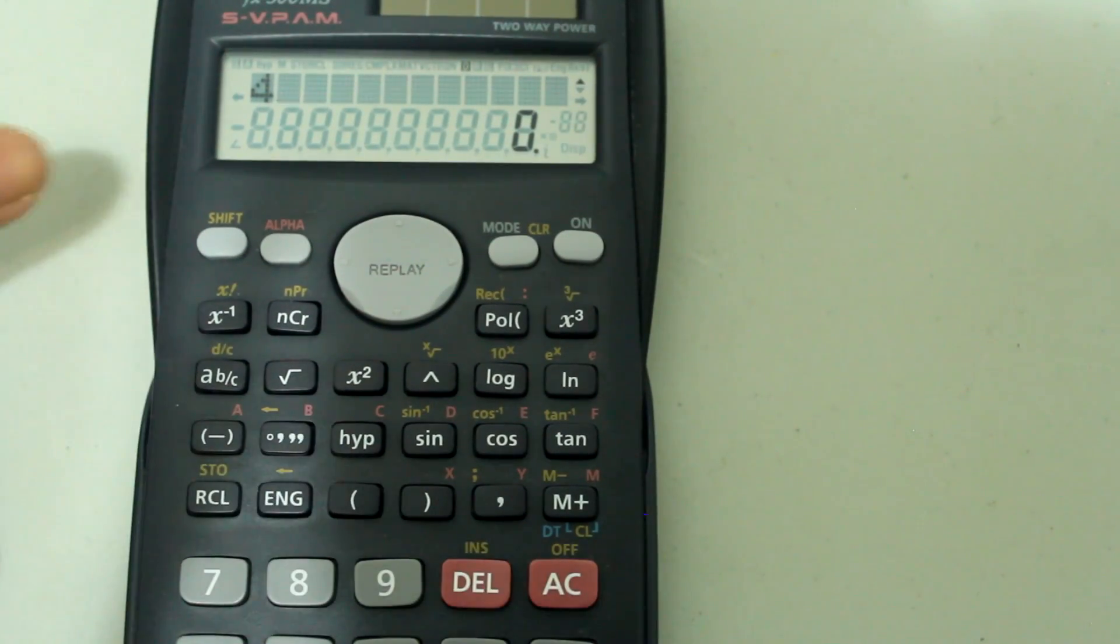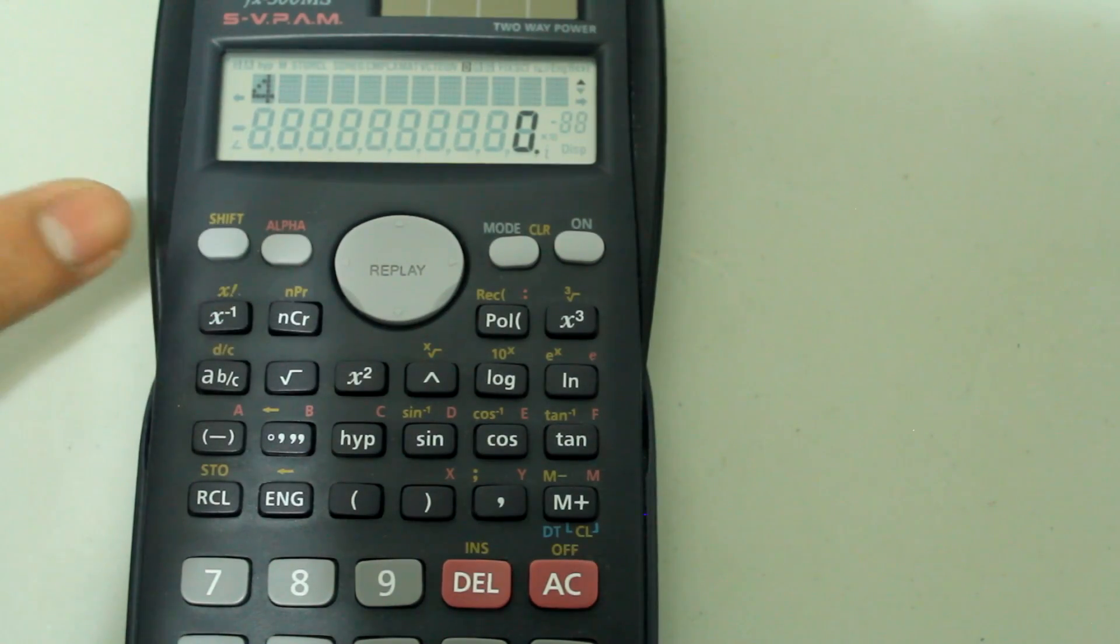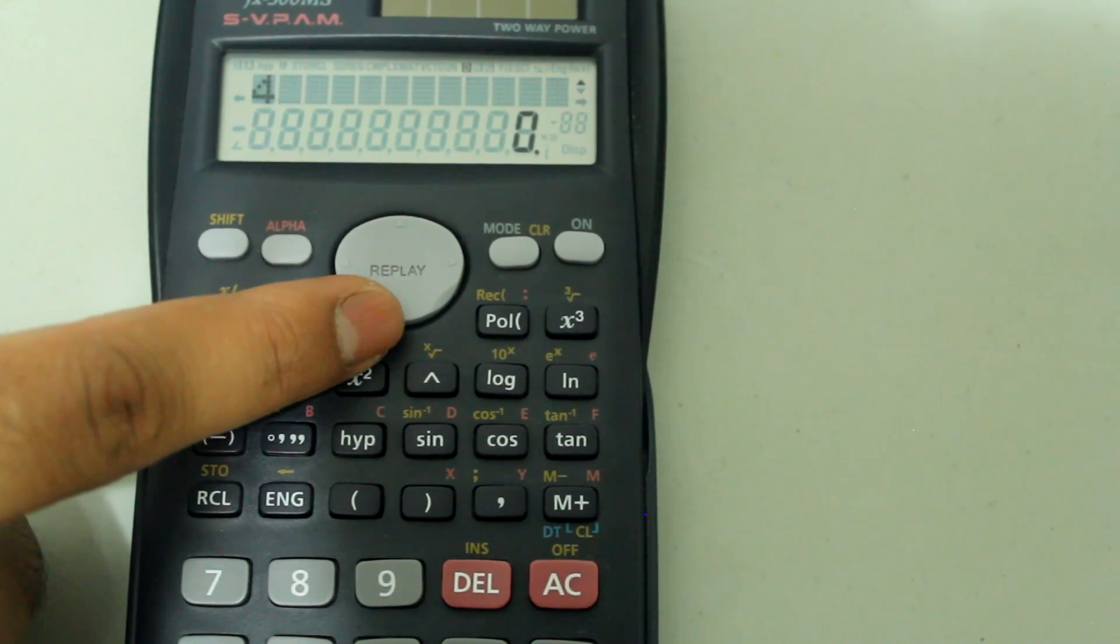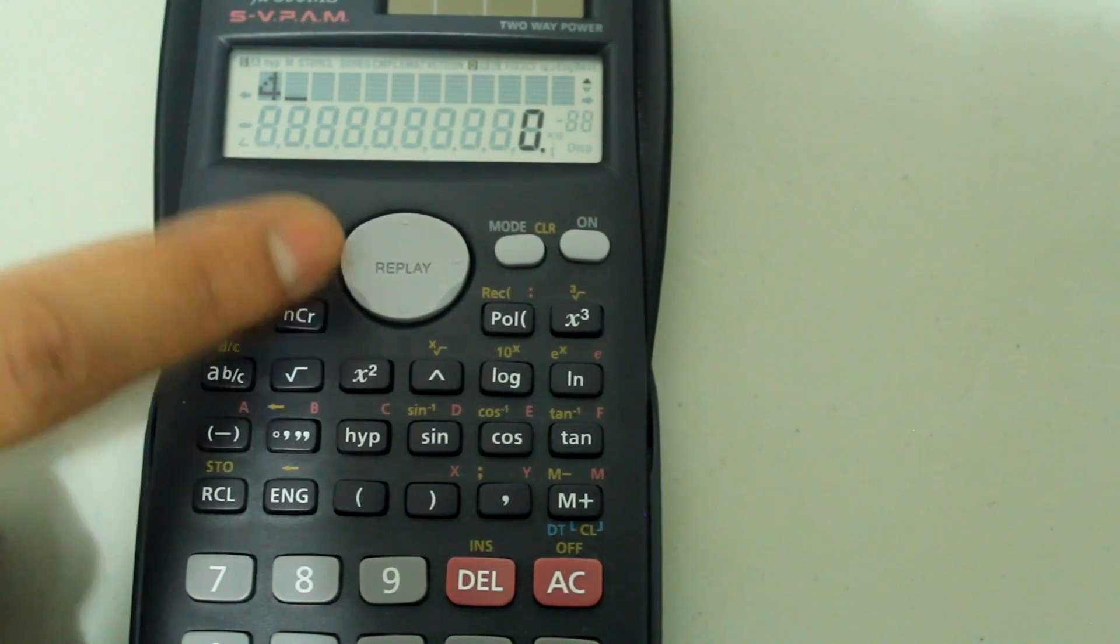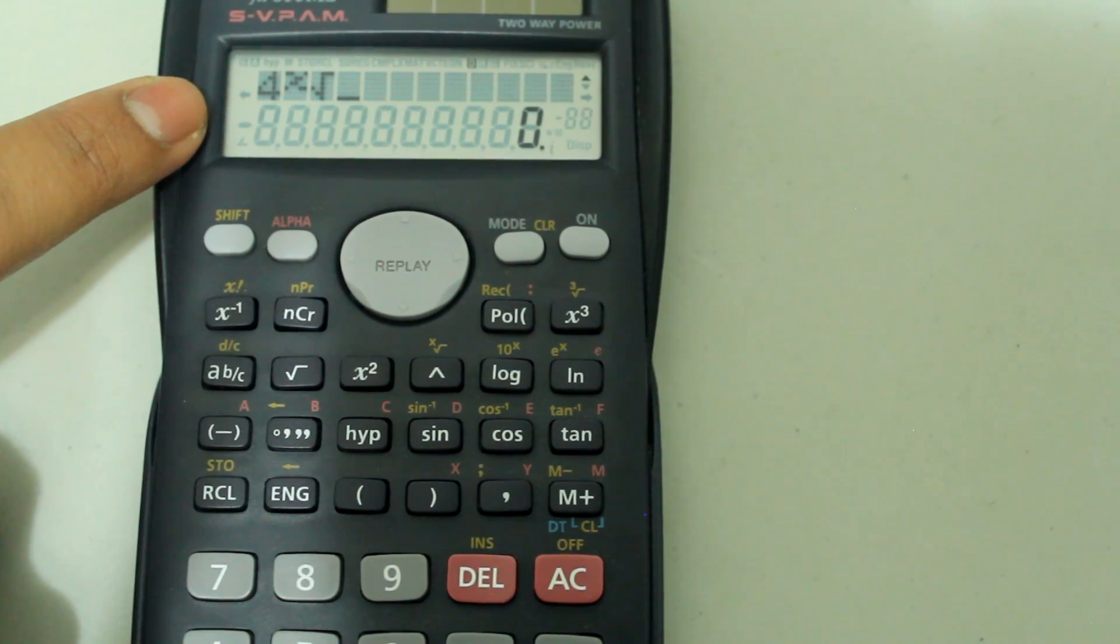If you look on the calculator you see that above the caret key there is an X and a root symbol. So type in shift and hit the caret button and now you get this on your screen.